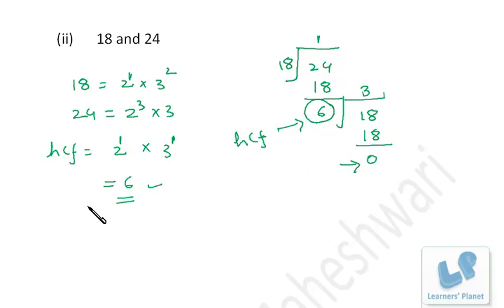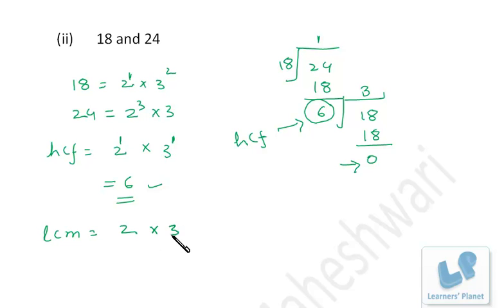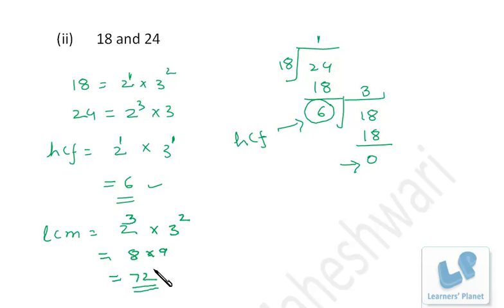Simultaneously, let's also find the LCM of 18 and 24. For LCM we take all distinct prime factors with their highest powers. The numbers are 2 and 3; highest power of 2 is 3 and highest power of 3 is 2. So LCM = 2³ × 3² = 8 × 9 = 72. So LCM is 72, HCF is 6, confirmed by both methods.